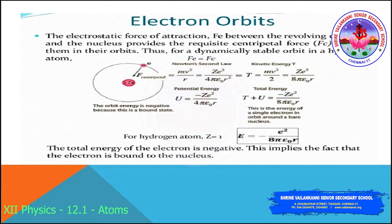The total energy E equals T plus U. With T equal to Ze² / (8πε₀R) and subtracting Ze² / (4πε₀R), we get the total energy equal to −e² / (8πε₀R) for hydrogen, where Z equals 1. The total energy of the electron is negative, which implies that the electron is bound to the nucleus. If the energy were positive, the electron would not follow a closed orbit around the nucleus.